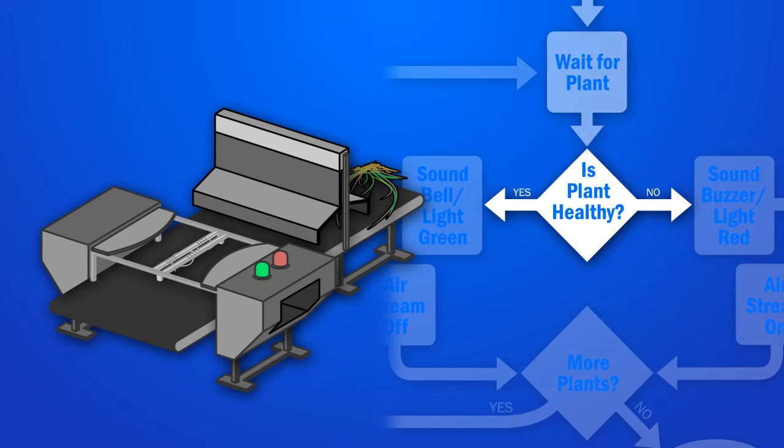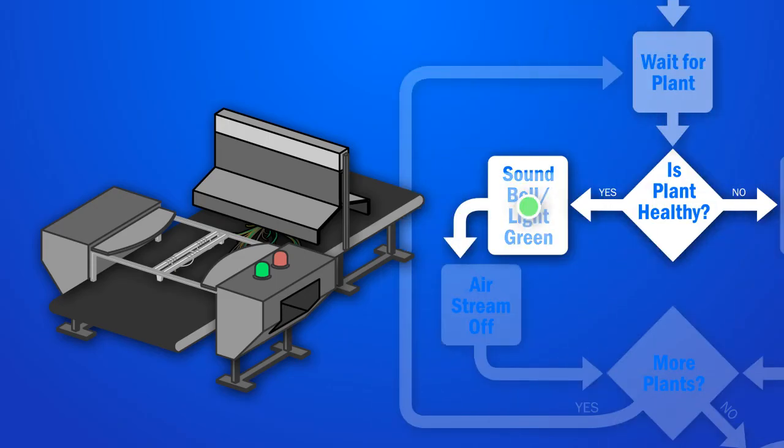Is the plant healthy? This one is. So we follow the yes arrow, which leads to a block that turns the light green.